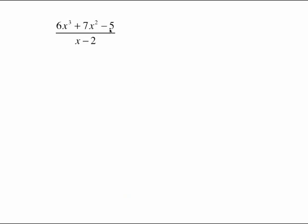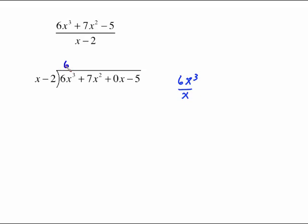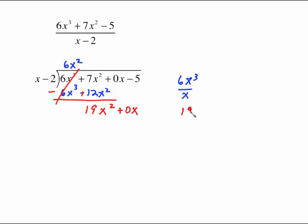Let's take a look at another one that's going to require a placeholder. Notice right off the bat we've got x cubed, x squared — we are missing the plain old x term. So when we go to our setup with x minus 2, we have a placeholder because we were missing the plain old x term. 6x cubed divided by x gives us 6x squared. Multiply 6x squared times both of those: 6x cubed minus 12x squared. Draw the line, change the signs — the 6x cubes cancel. 7x squared and 12x squared is 19x squared plus your 0x. Begin dividing again: 19x squared over x is 19x. Come back and multiply: 19x times the whole divisor is 19x squared minus 38x.